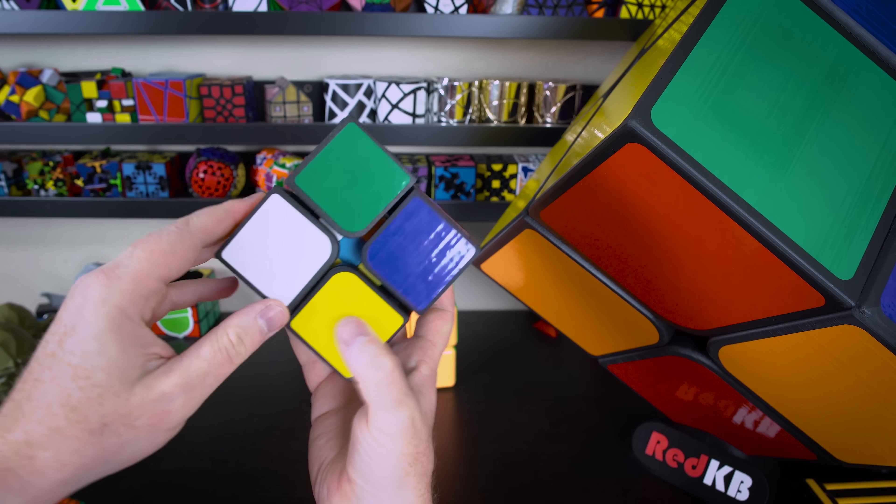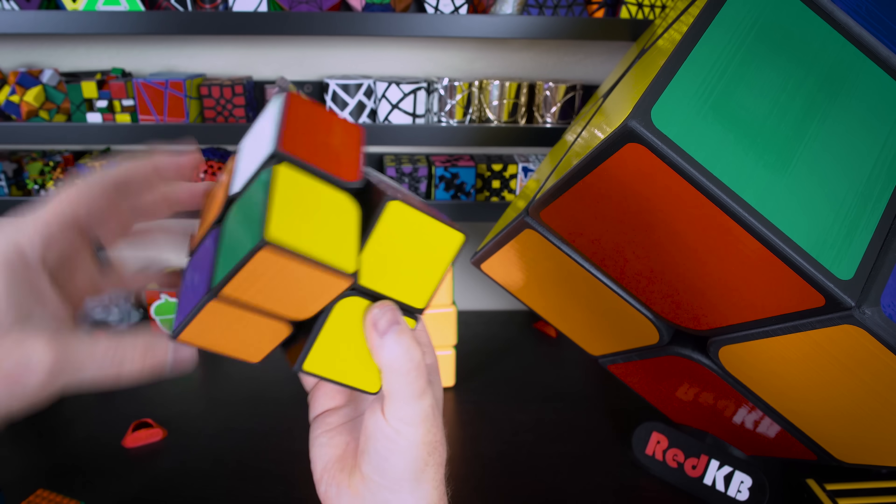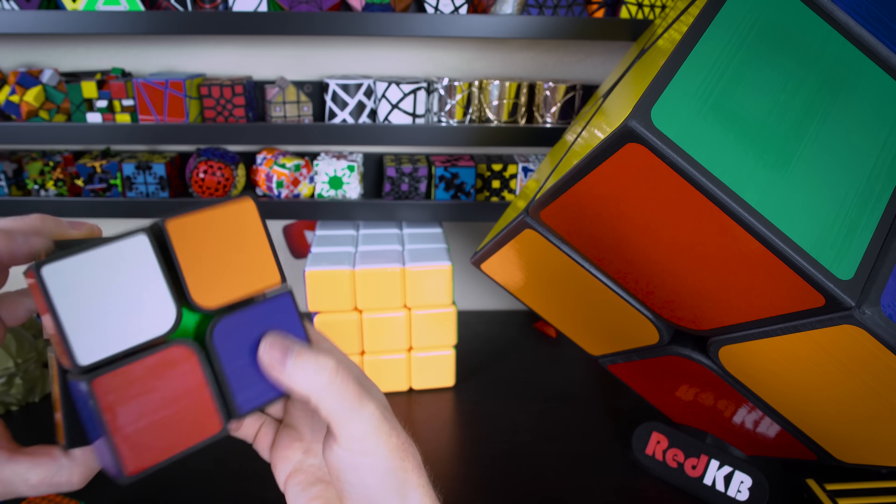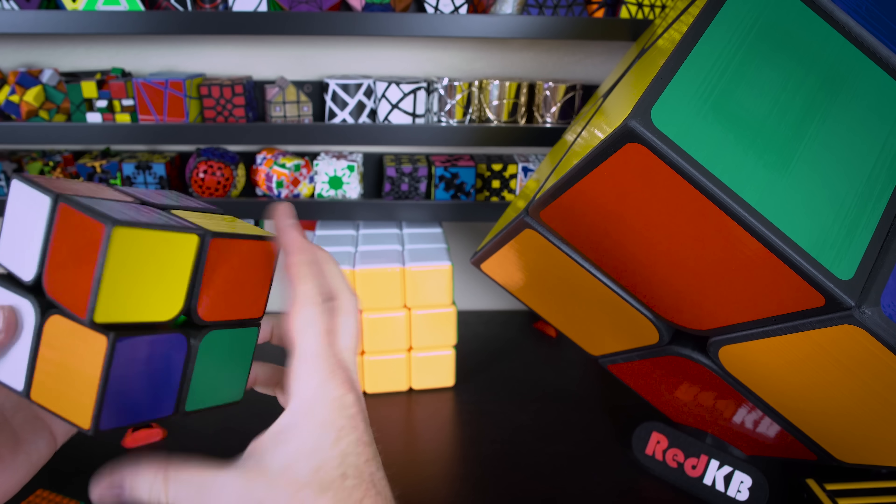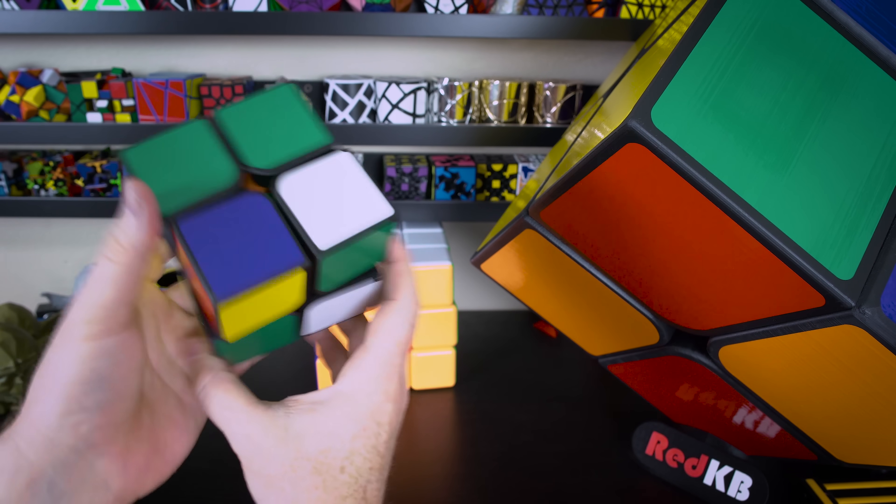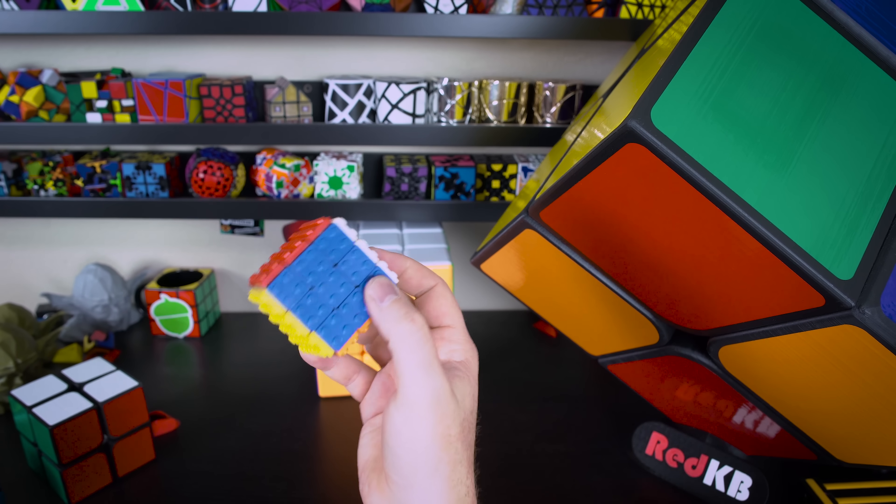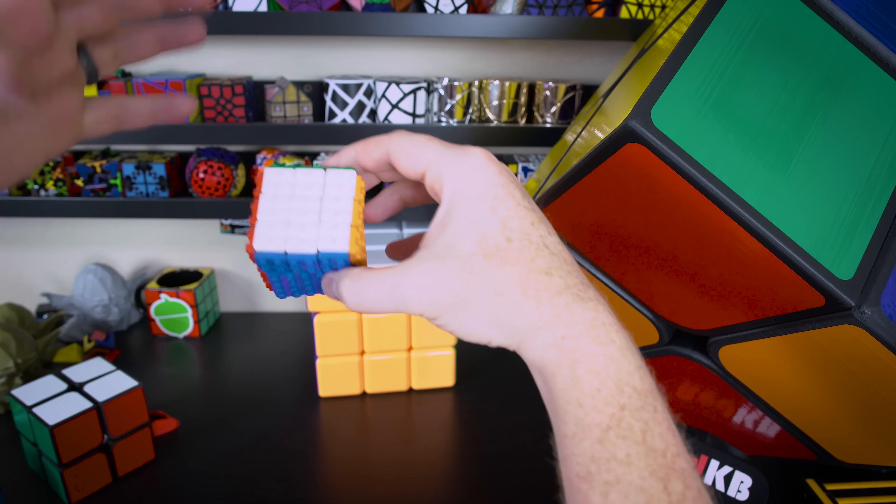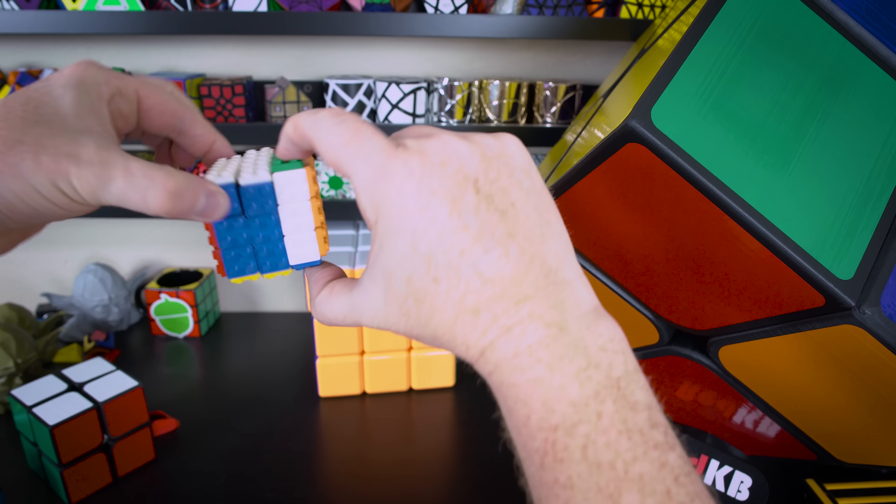So having a prototype really helped ensure that I could deal with things like the center layers. One thing you have to worry about is that the center layers can get misaligned and so you need to come up with some kind of alignment mechanism that will allow you to deal with that for a 2x2.